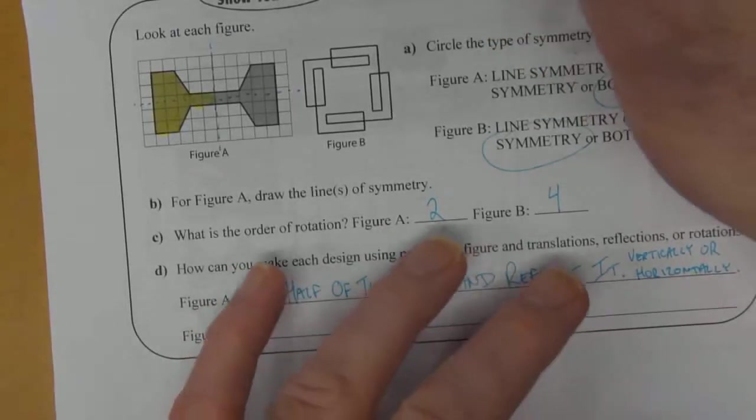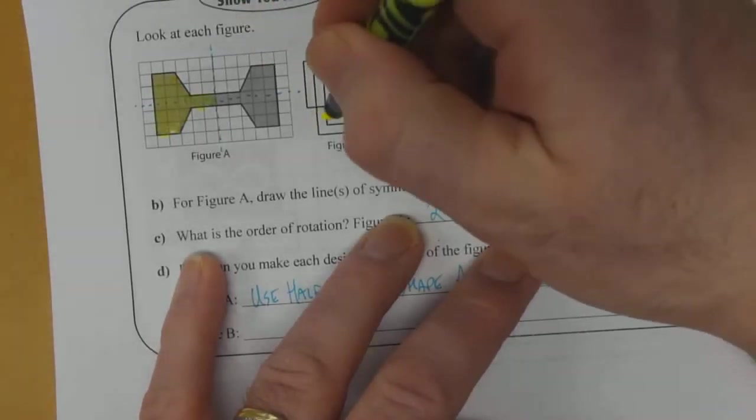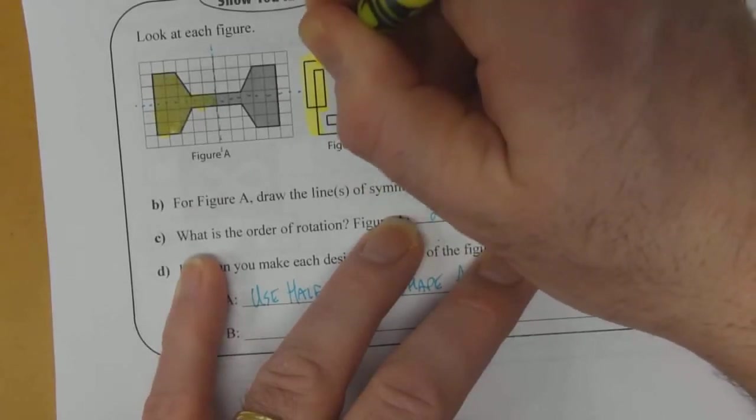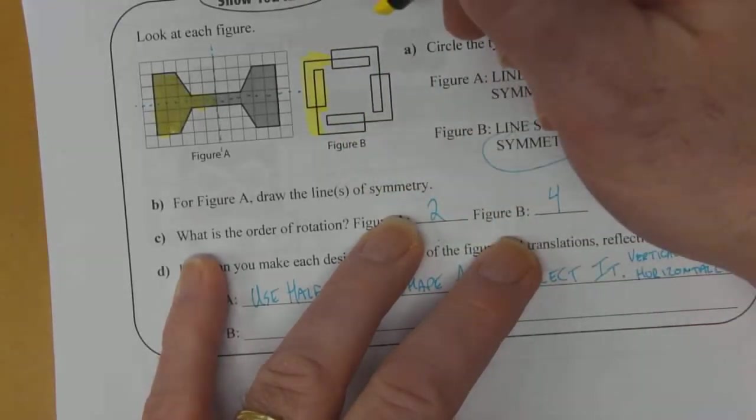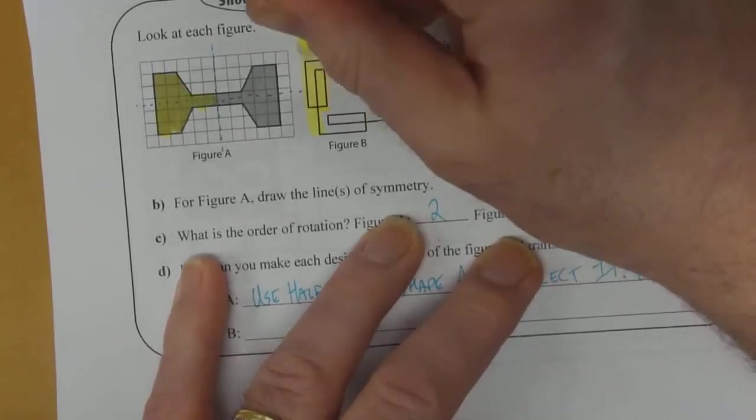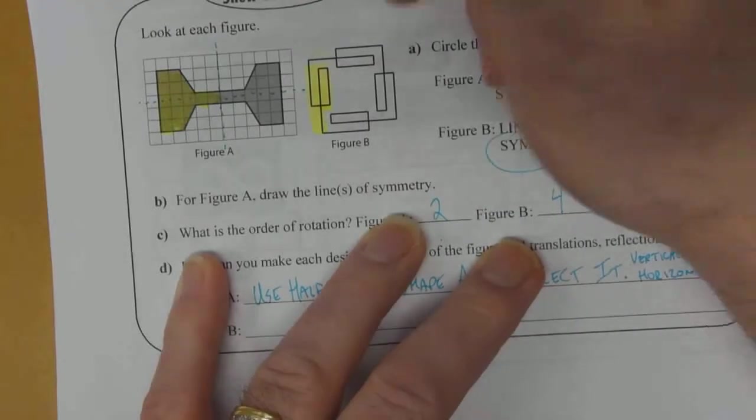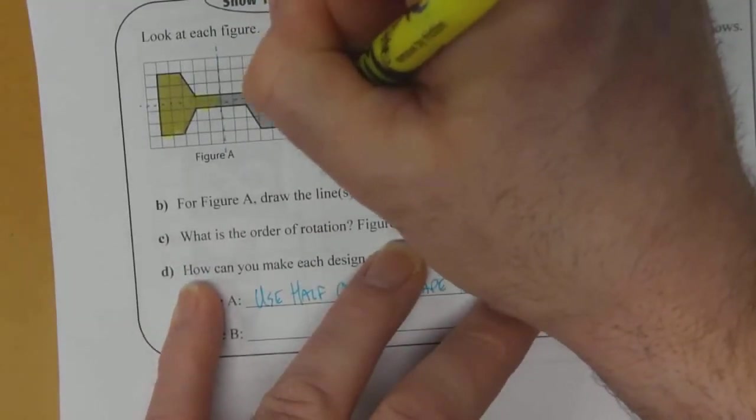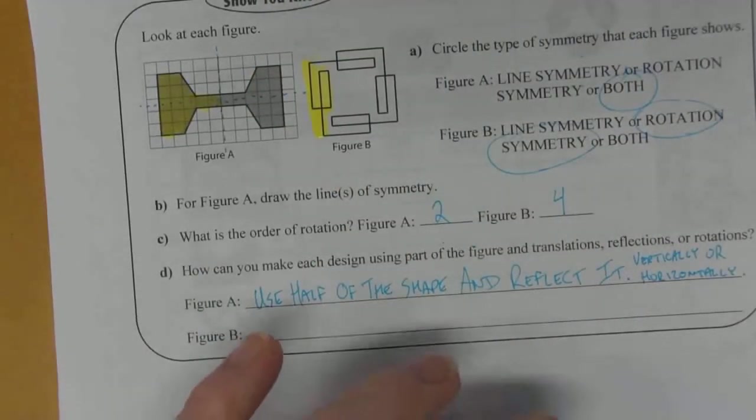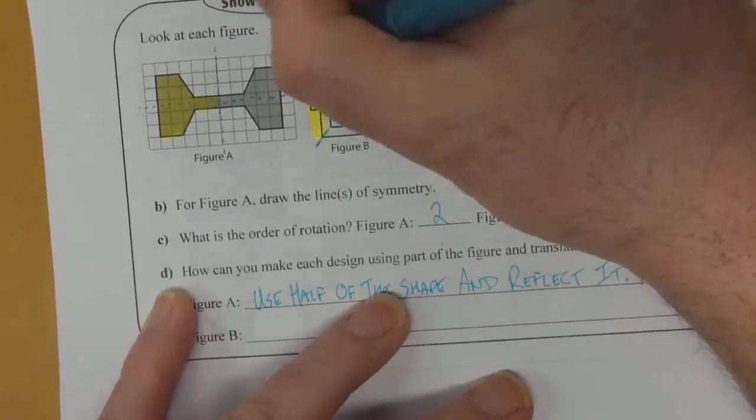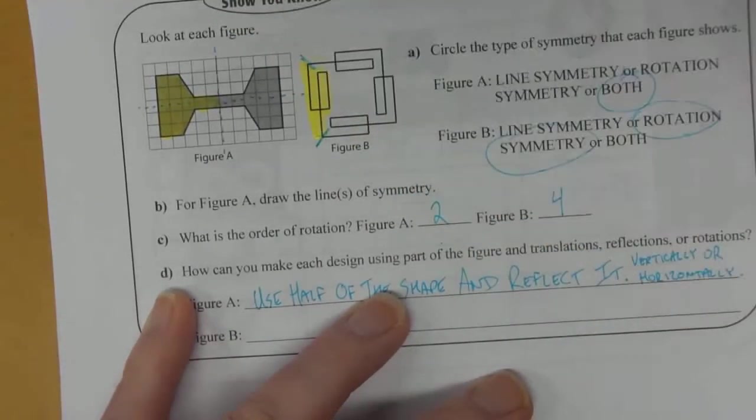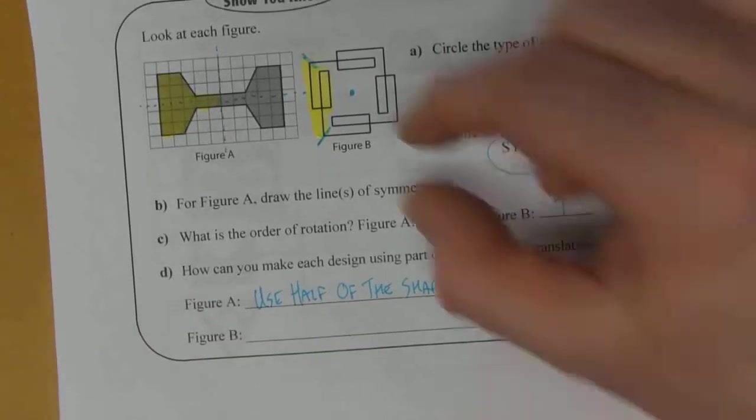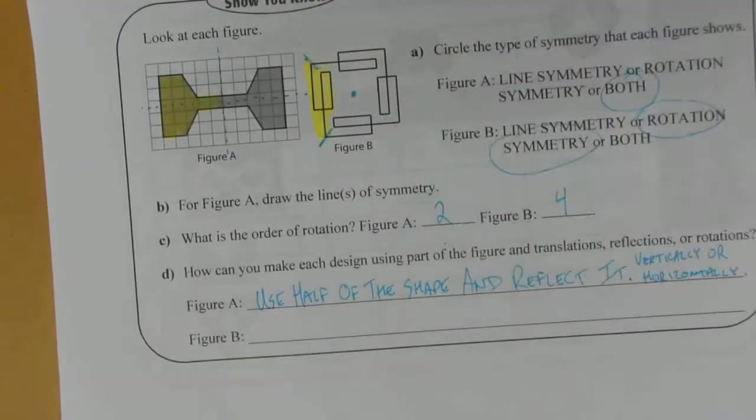What you could do is take this much of the shape here. Oh, no, too much. So, everything that's highlighted here, you can take that so it starts there and ends here, and you can rotate it around this center point and then that little snippet can be rotated and created.